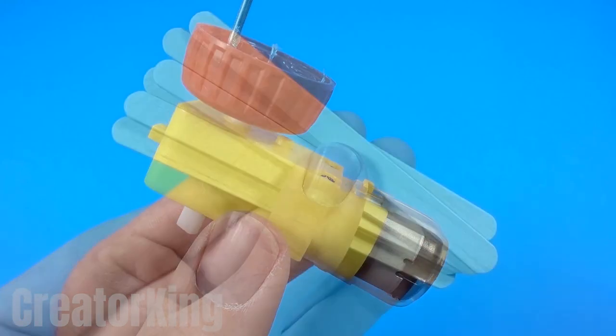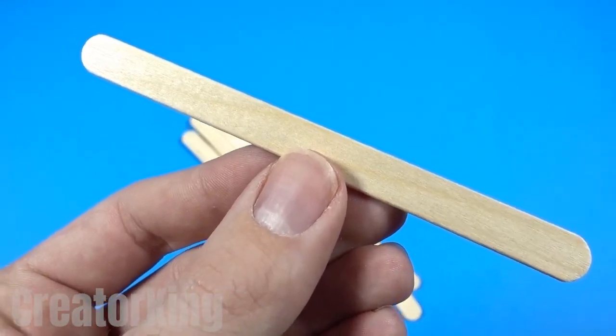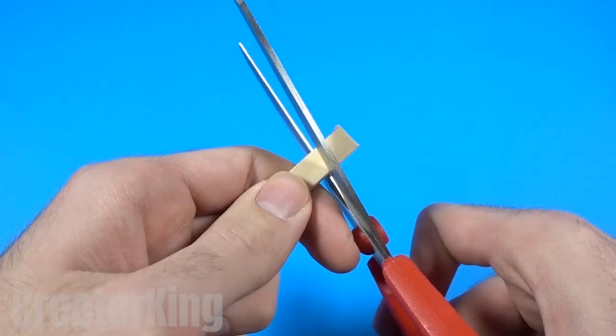We'll need to eat a popsicle to be able to use the stick. Cut off the rounded ends and continue cutting it into very small pieces.